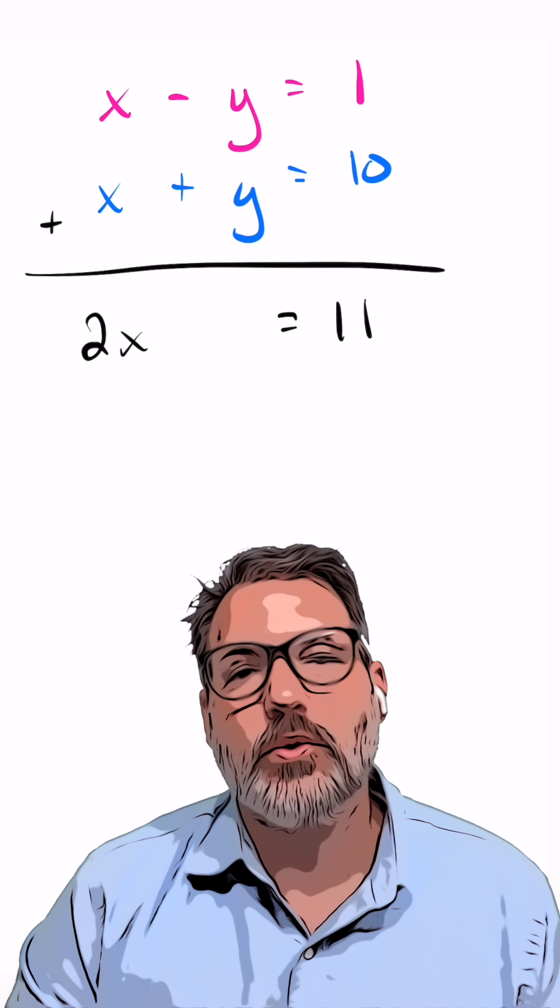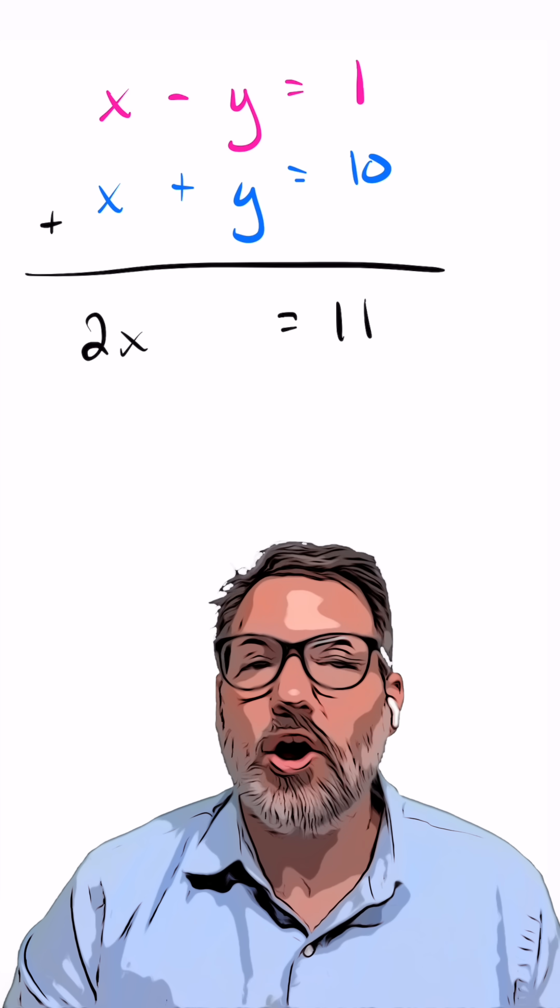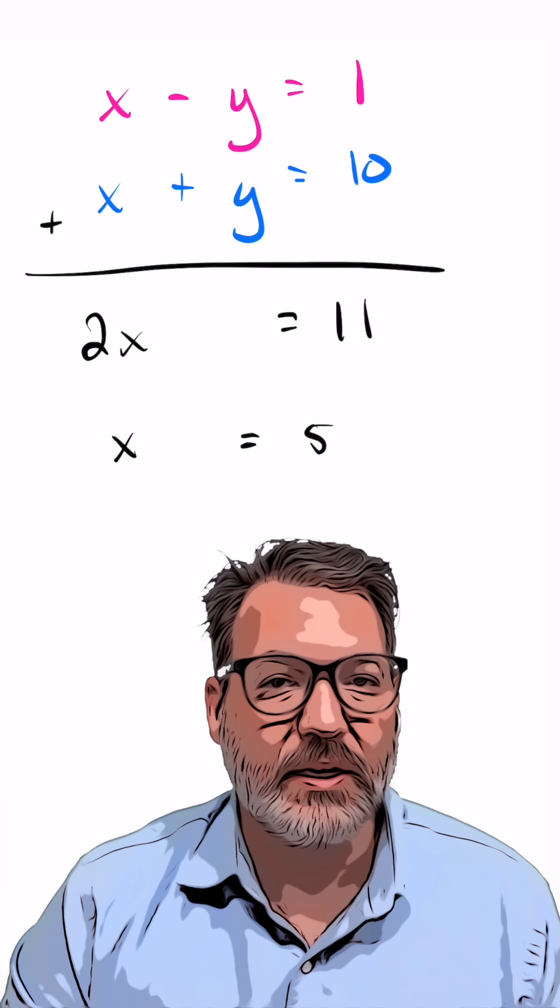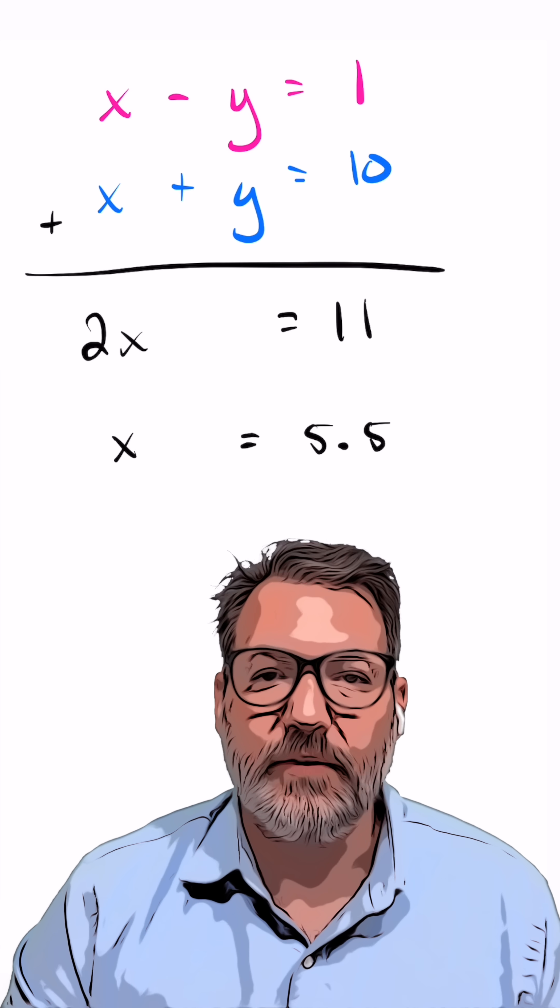1 plus 10 is 11. And then to get the x by itself, all I have to do is divide everything by 2, which gives me back x equals 5.5.